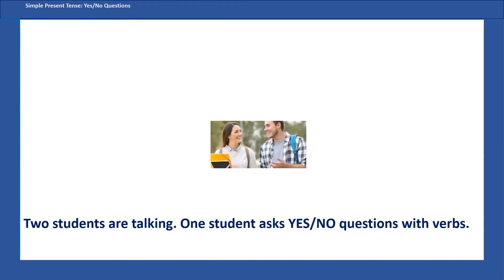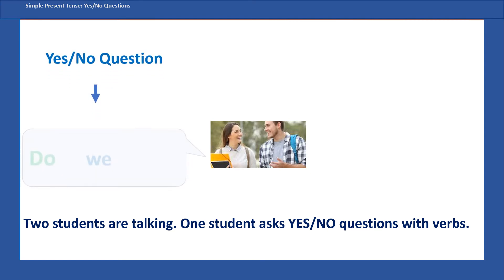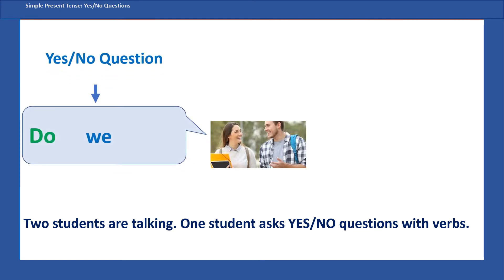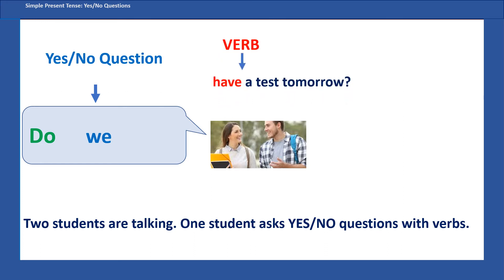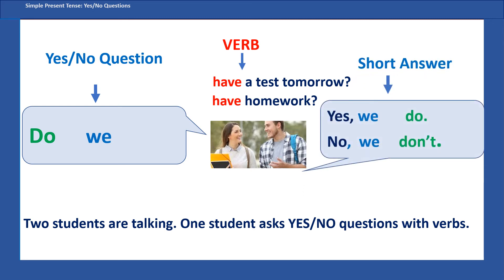Two students are talking. One student asks yes/no questions with a verb, so they use 'do.' Do we have a test tomorrow? Do we have homework? And the other student replies 'Yes, we do' or 'No, we don't.' So 'do' appears in the yes/no question as the helping verb.